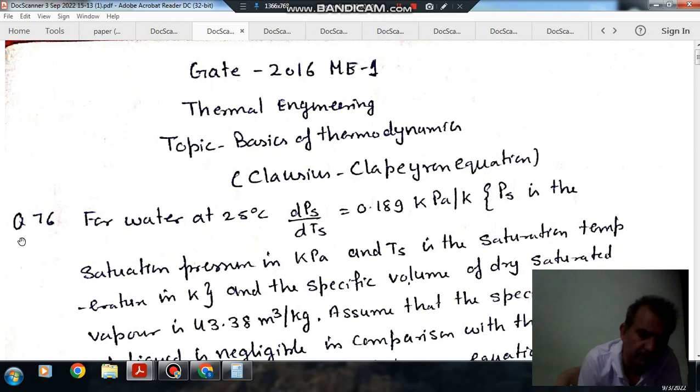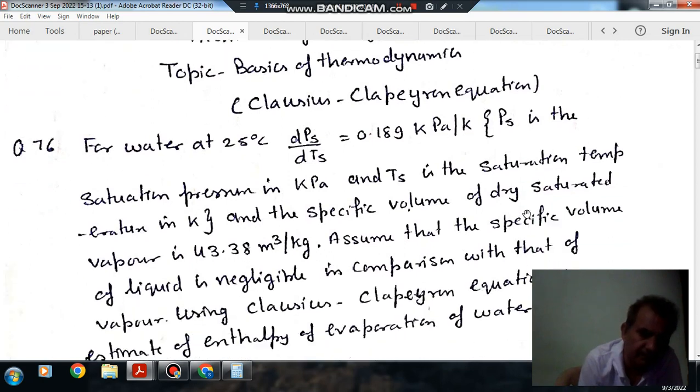Subtopic is Clausius-Clapeyron equation. Question number 76 from GATE 2016 ME-1 is: For water at 25 degrees Celsius, dP/dT equals 0.189 kPa per Kelvin. P is the saturation pressure in kPa and T is the saturation temperature in Kelvin.